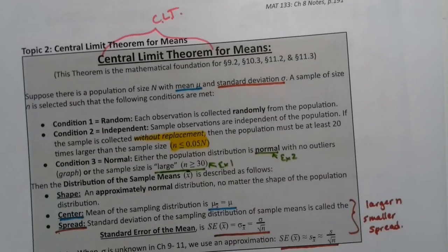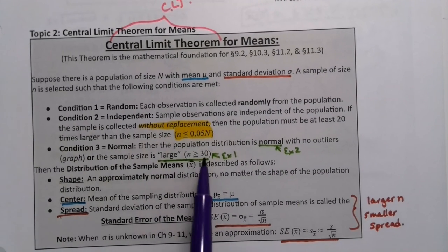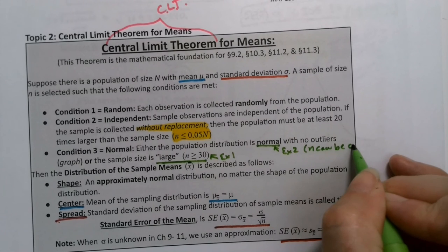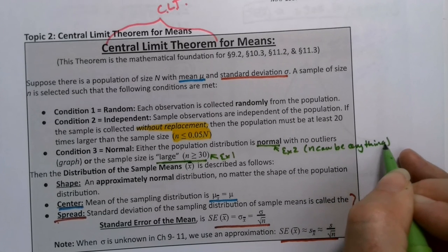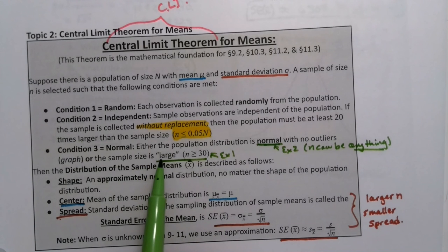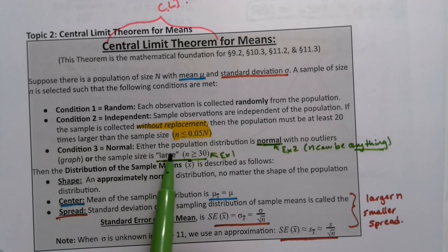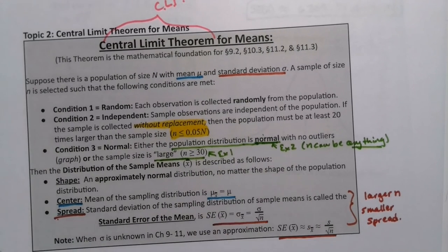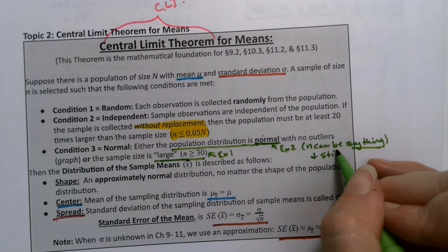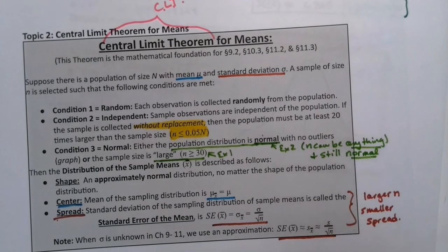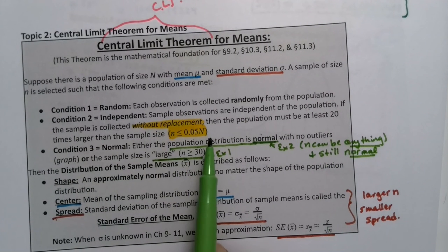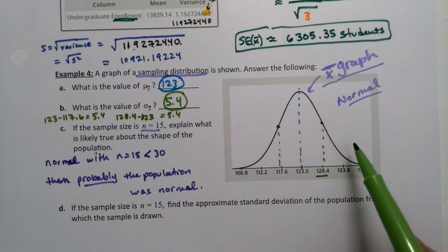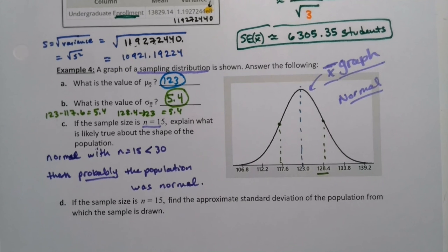Which is less than 30. So if it's normal with n equal to only 15, then that probably means the population was normal to begin with. Because 15 otherwise might not be enough to overcome the skewed shape. If there was a skewed shape, 15 wouldn't be enough. We want 30 or higher. So if it's normal when n is only equal to 15, that probably means the distribution was normal. Remember, those are the two ways we can get normal: either it can be normal to begin with, or n can be large. If it's normal to begin with, n can be anything and it will still be normal.